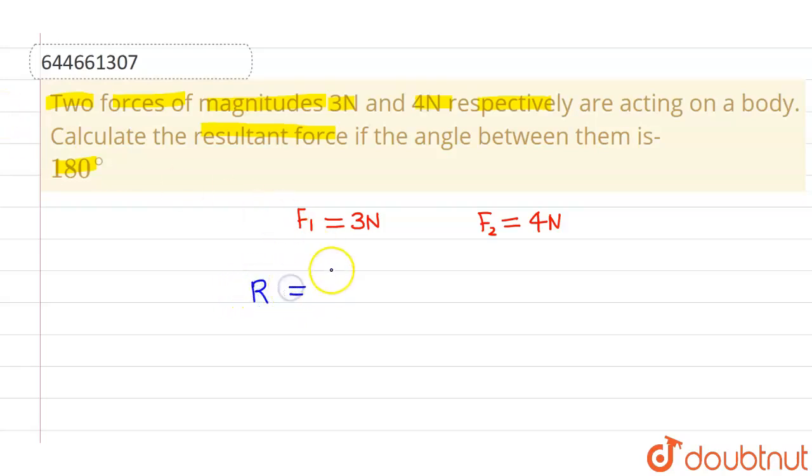a body, the resultant is given by root over F1 square plus F2 square plus 2 F1 F2 cos theta, where theta is the angle between both vectors. But in this case, theta